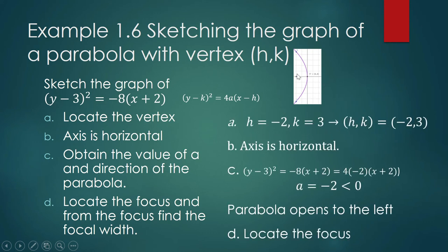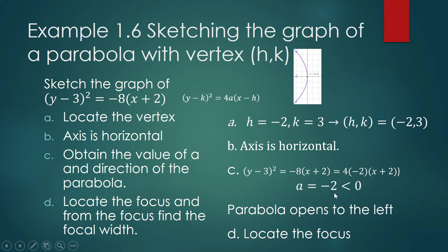When your task is to sketch the graph, you always doodle what you know first: the parabola opens to the left and the axis is horizontal. Factoring out gives a equal to negative 2, which is less than zero, confirming the parabola opens to the left. We are now ready to locate the focus.